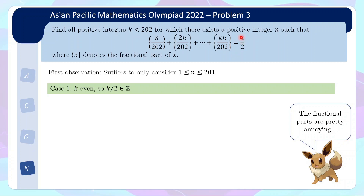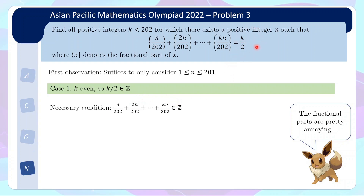When k is even, the right-hand side is just an integer. To get rid of the fractional parts, we allow the integer parts to appear — but the integer part only contributes an integer to the left-hand side. So if this equation is to hold, a necessary condition is that if we remove all the fractional symbols, we allow each term to increase by an integer, so the whole thing is still k over 2 plus some integer. Without fractional parts, you can just add this up like a normal arithmetic progression: 1 + 2 + 3 + … + k, which gives k(k+1)/2. That times n over 202 must be an integer.